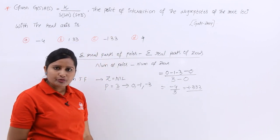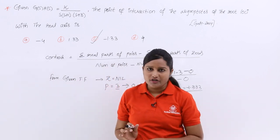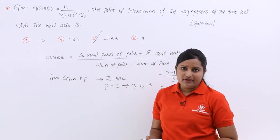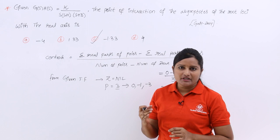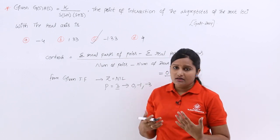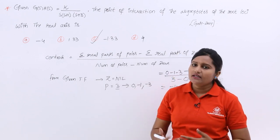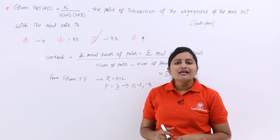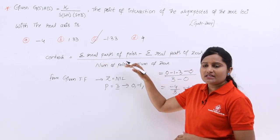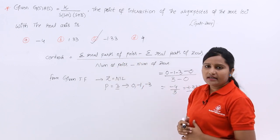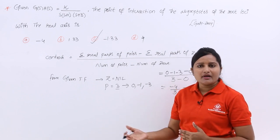The value is truncated to two decimal places as -1.33, which is the correct option for the centroid. To summarize: when an open loop transfer function is given, first observe the numerator and denominator to get poles and zeros. Equating the numerator to zero gives zeros; equating denominator terms to zero gives poles. Then substitute into the centroid formula: summation of real parts of poles minus summation of real parts of zeros, divided by number of poles minus number of zeros.